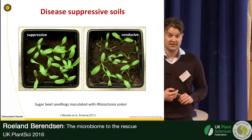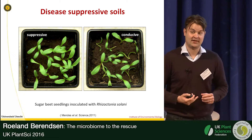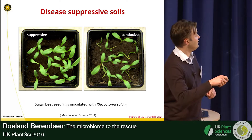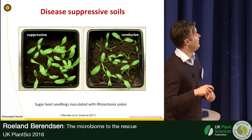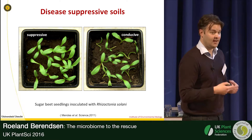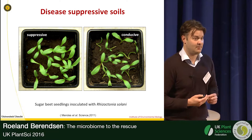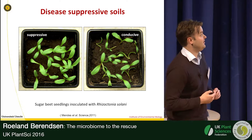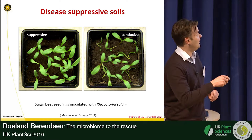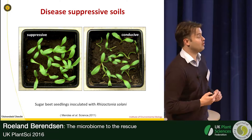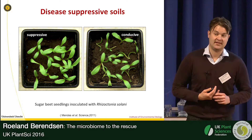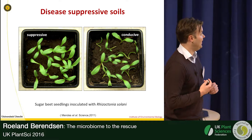The best argument I can give for this is the existence of disease suppressive soils — soils in which plants do not get disease even though a virulent pathogen is present. Here's a nice example with sugar beet seedlings growing in a disease suppressive soil and in a soil that's physically and chemically the same, taken from an adjacent field. When both were infected with Rhizoctonia solani, the seedlings in the conducive soil got very sick whereas those in the suppressive soil stayed healthy.